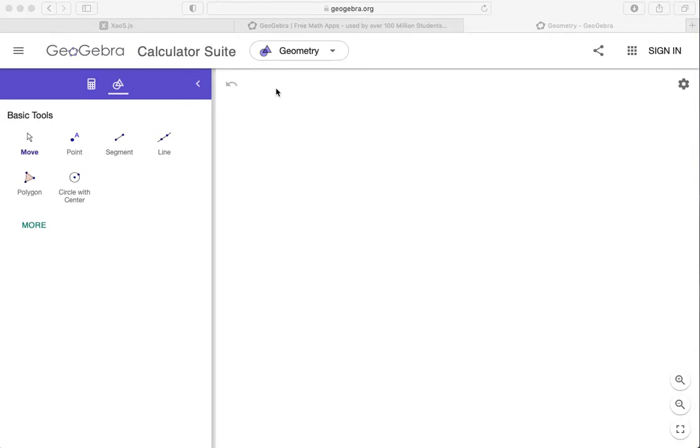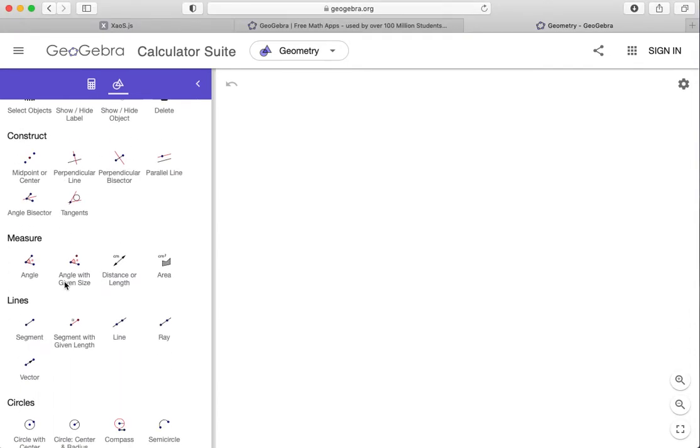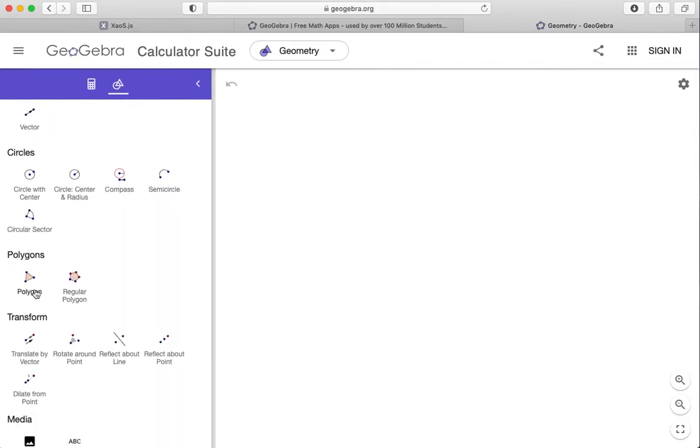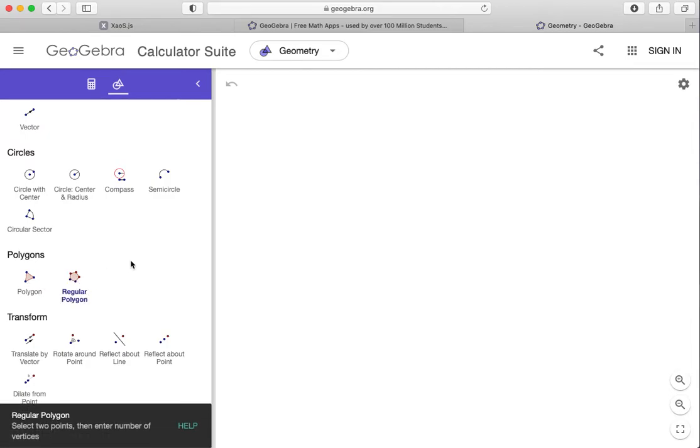So we're in the Geometry Calculator on GeoGebra, and we're going to try to build Sierpinski's Triangle. I'm going to click on More here, and what I want to do is an equilateral triangle, so all three sides have the same length. I'm going to click here on Regular Polygon to do that.